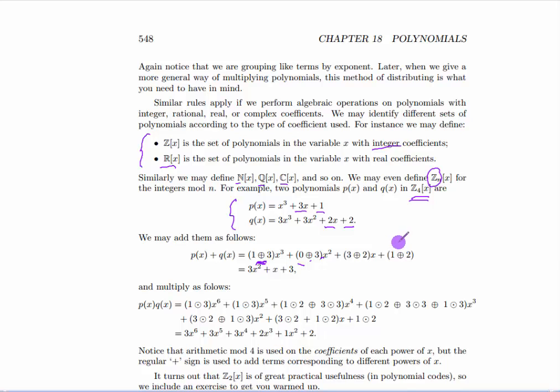Now for multiplication, we will do the same thing we did before. We can multiply and distribute. Another way of doing the multiplication is simply to identify all of the terms that correspond to each power. For instance, here I have x cubed and x cubed term. If I multiply these two together, I'm going to get a 1 here, 3 here, and the power is x to the sixth. But I use the modular multiplication on the coefficients. So that's the only term with x to the sixth.